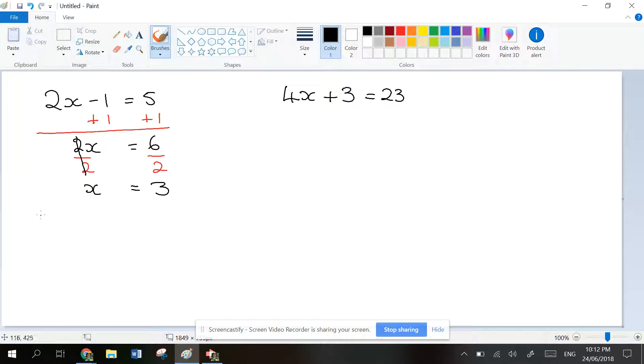You can check this. Let's put it back into the original equation. If x is 3, this equation says 2 times x. The x is 3. If you minus 1 from that, that's 6 minus 1, which gives you 5. And yes, that is true. That's exactly what we're supposed to get.